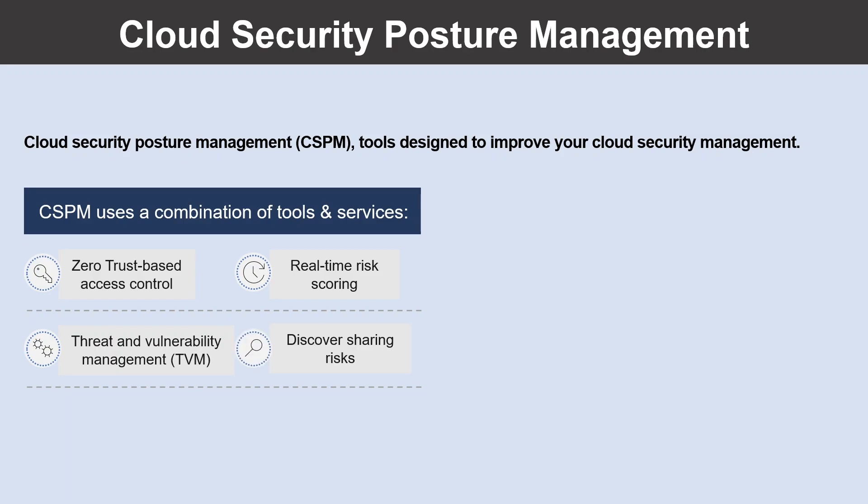The next one is discover sharing risk, which is done to understand the data exposure of enterprise intellectual property on sanctioned and unsanctioned cloud services. The next one is to have a technical policy, so you can apply guardrails to audit and enforce the organization's standards and policies to technical systems. The last one is threat modeling systems and architectures, which is used alongside other specific applications.